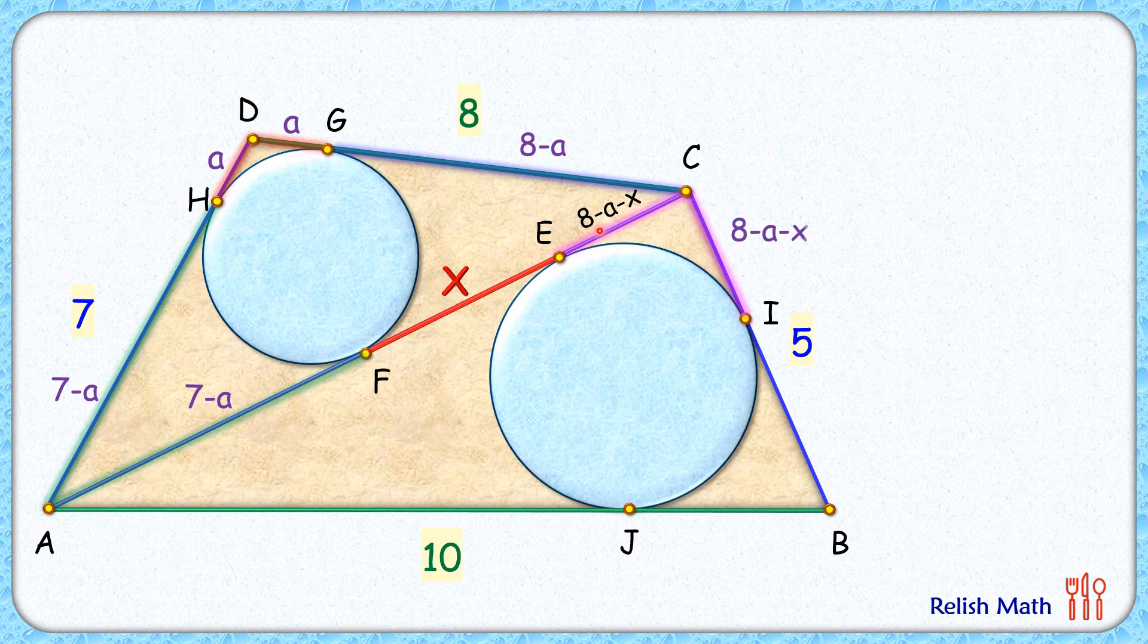Now again here BC is the full length which is 5 centimeters, and thus BI length will be 5 minus (8 minus a minus x) centimeters. Simplifying it, this is nothing but a plus x minus 3 centimeters. Again from external point B, two tangents BI and BJ are drawn, and thus the length BJ will be a plus x minus 3 centimeters.